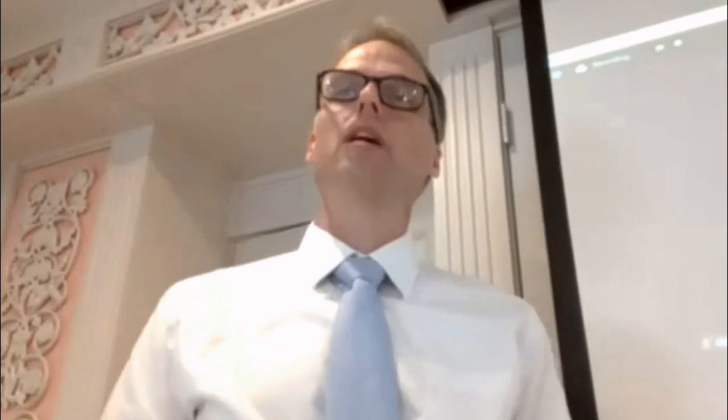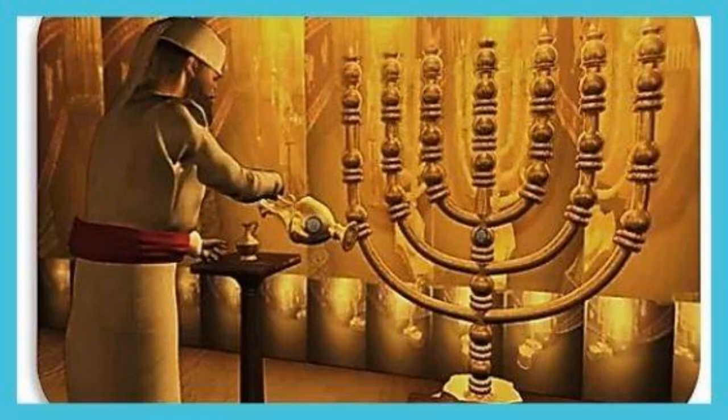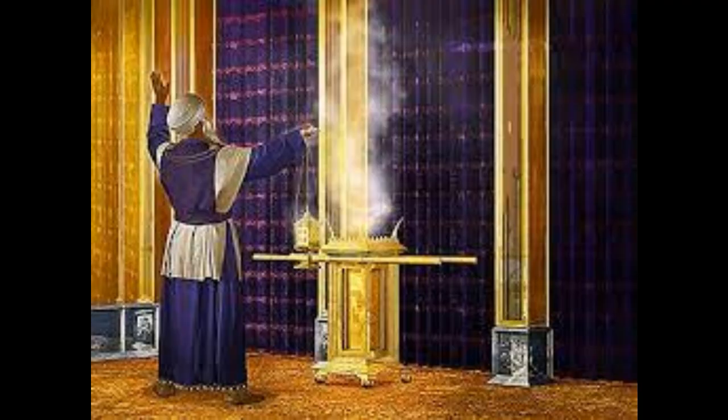Looking at John chapter 6 verse 33, this bread in the sanctuary represents Jesus — he is the bread of life. Anyone that eats of him will never be hungry. Looking across the holy place we see the seven lampstands, which were continually burning — they never went out. There are many verses talking about Jesus being the light of the world. So we have the light, the bread, and the incense. The incense represents the prayers of the people who have accepted Jesus.